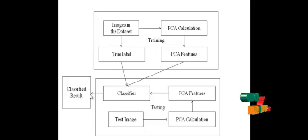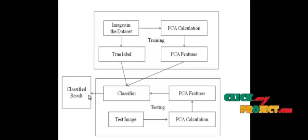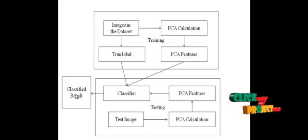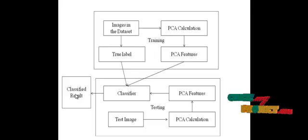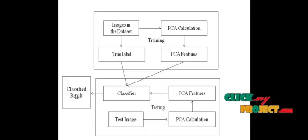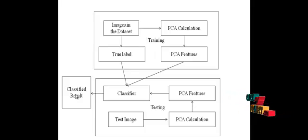The extracted features and labels are passed into the classifier. For classification, we are using a neural network. A single neuron by itself is not a very useful pattern recognition tool. The real power of neural networks comes when we combine neurons into multi-layer structures. The neural network receives input, applies a linear combination and activation to the inputs, and produces outputs which give a classified result. Based on that, we perform the classification.